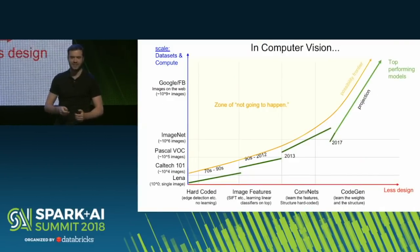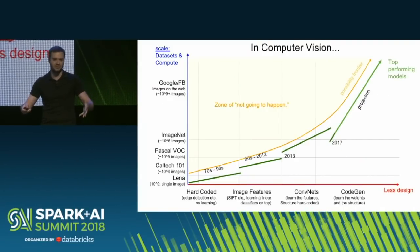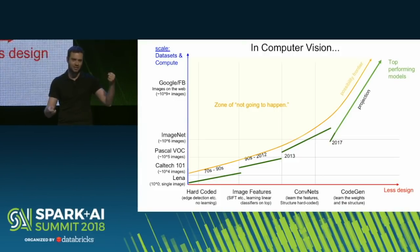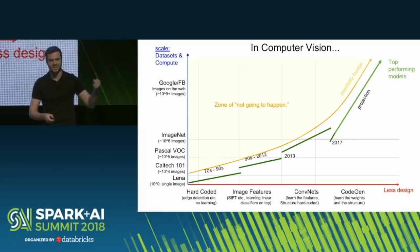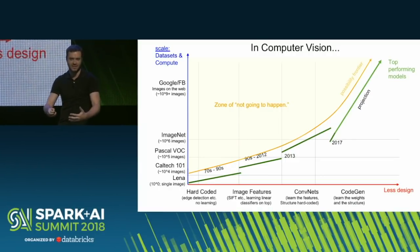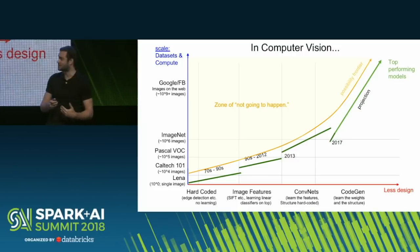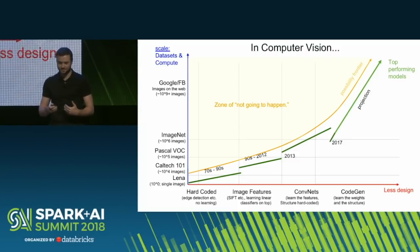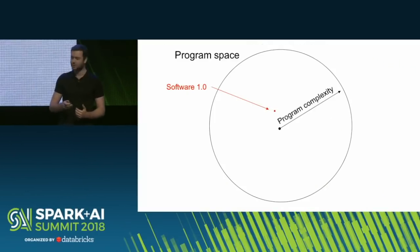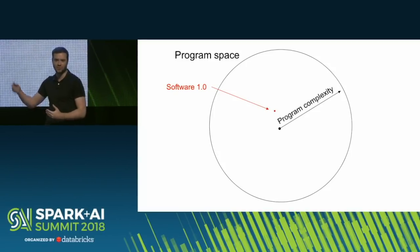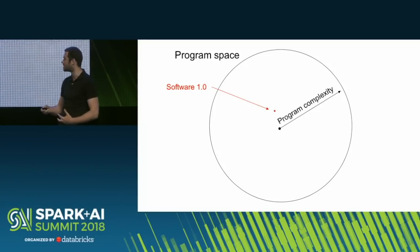We're seeing this trend in computer vision: the better you want something to work, if you have an evaluation criterion like loss or accuracy on your test set, the best thing to do is step back, design less, and leave more to the optimization. A good framework: if you'd like to design the code yourself, this is Software 1.0 — you sit down and write Python or C++, identifying some piece of the program space.